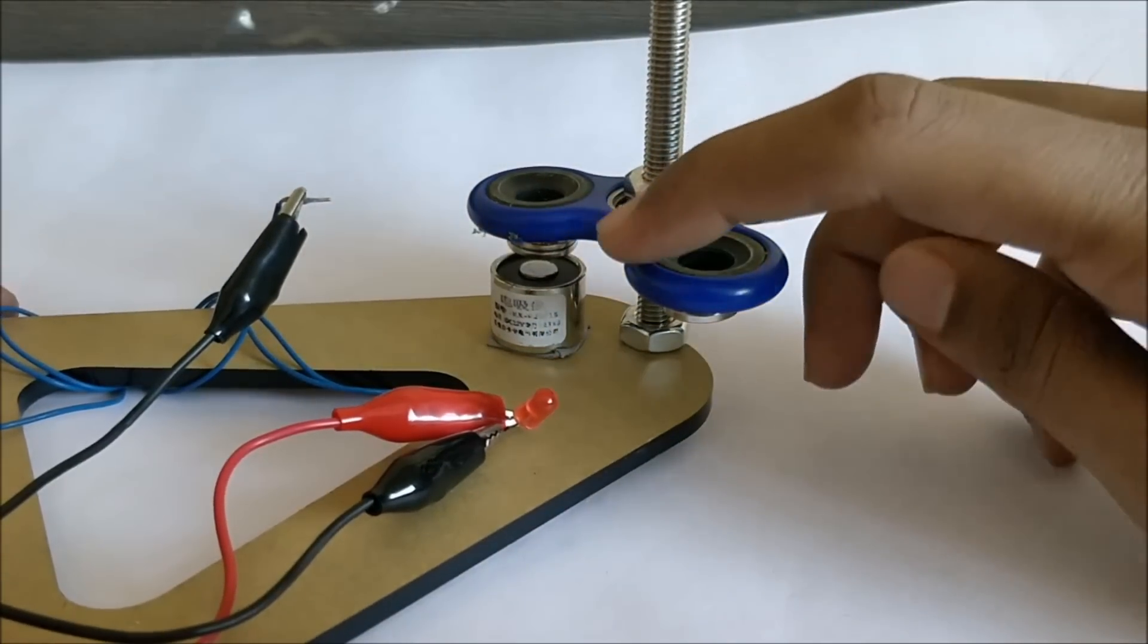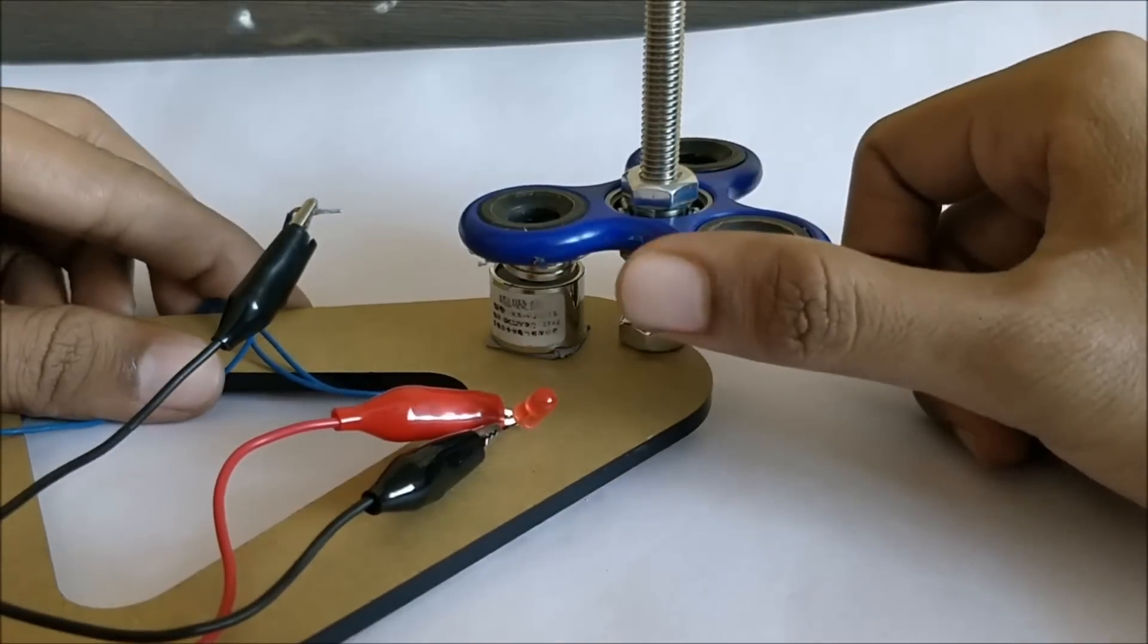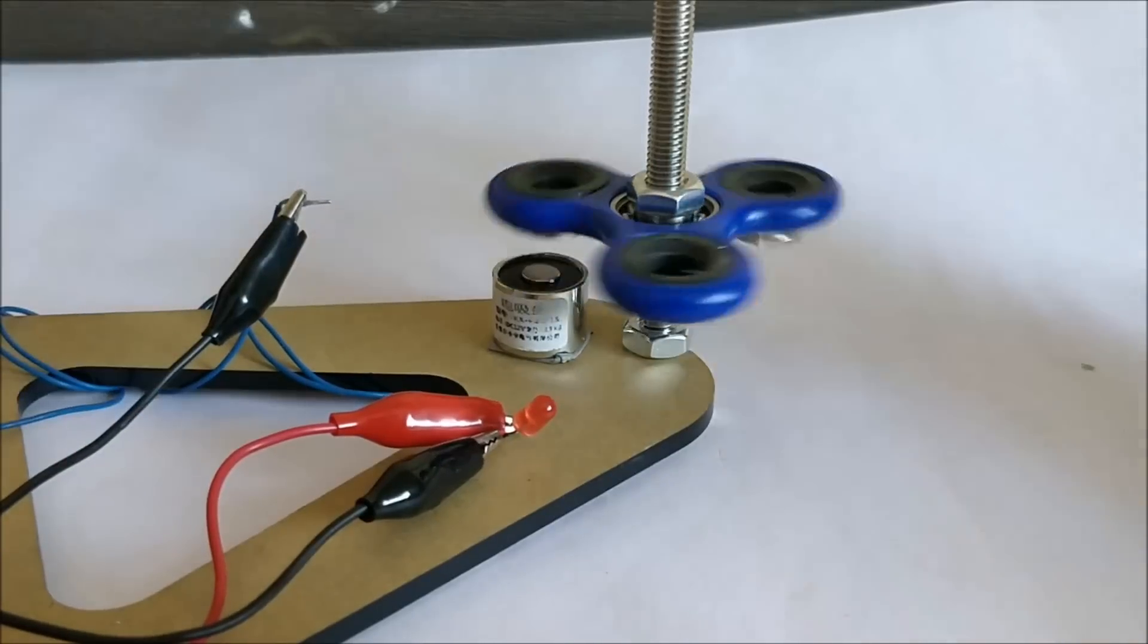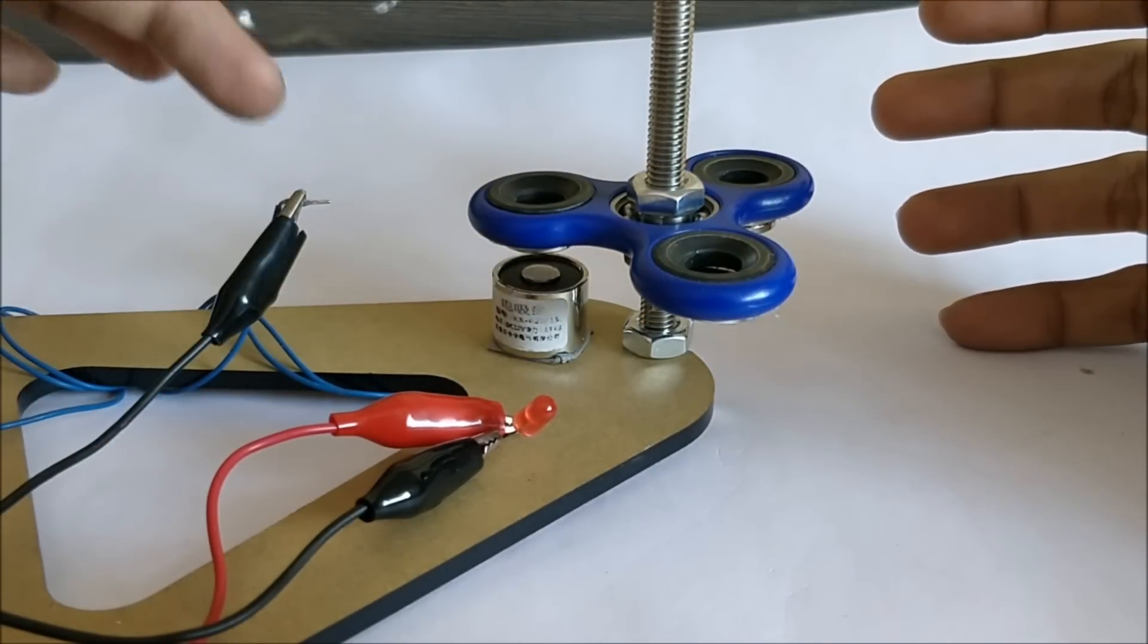So what we have done here is we have used magnets to produce a varying magnetic field by rotating this fidget spinner, and it actually inverses the principle. So this magnetic field will produce a current which flows through the wire of this electromagnet and it is glowing directly here.